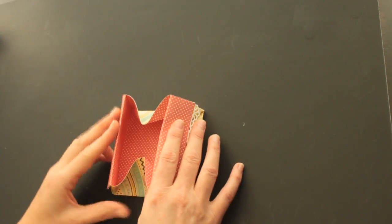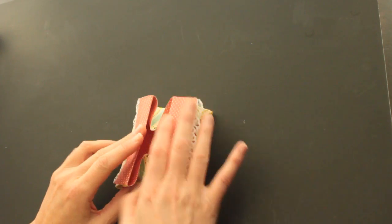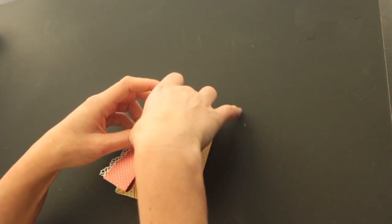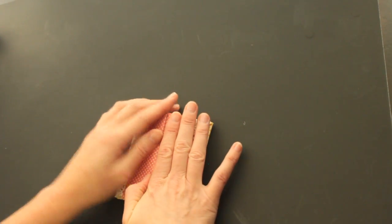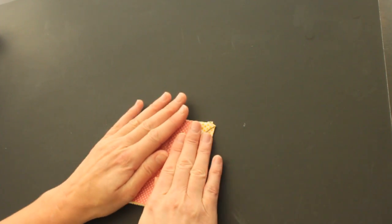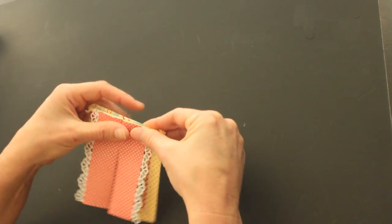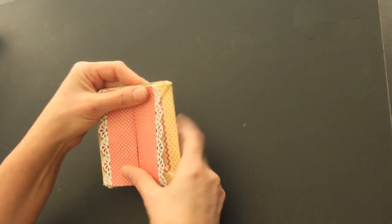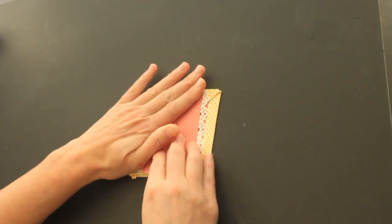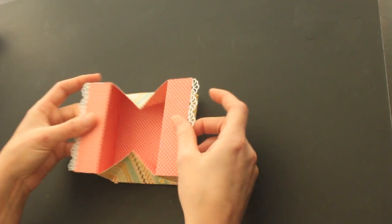And then the first time to fold this down, you have to be a little bit careful so you don't rip your paper. And some paper works better than others. I have noticed that the October afternoon paper is just a little bit on the stiff side. So now your box is done.